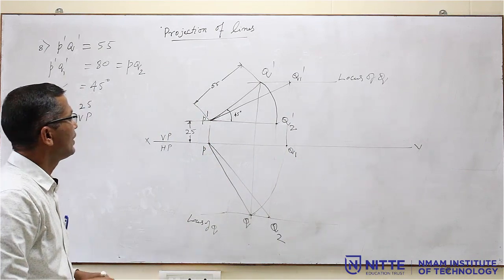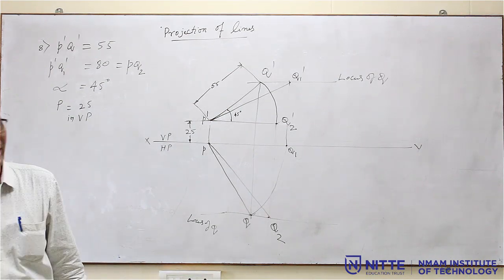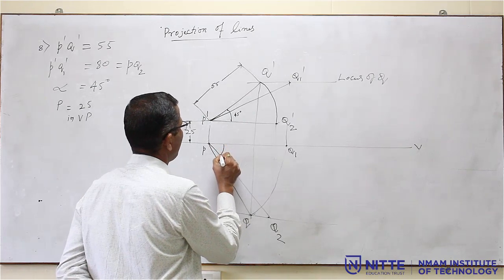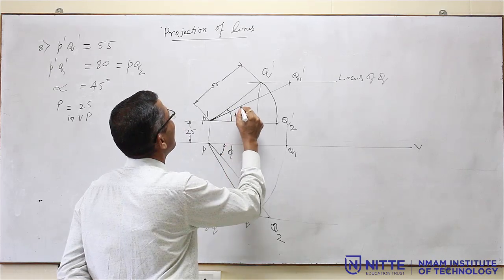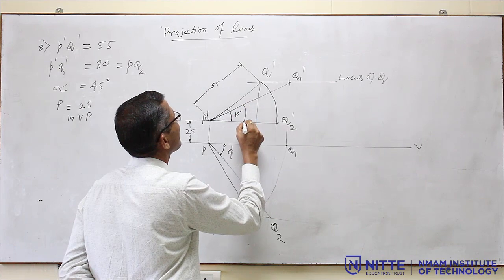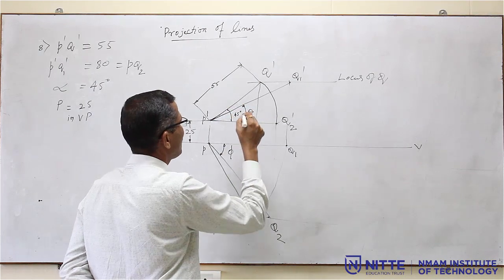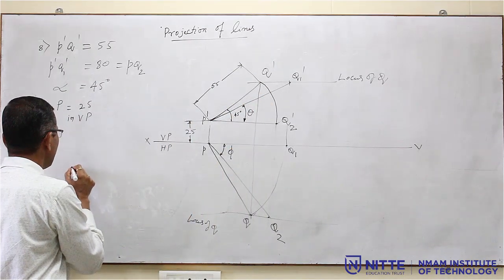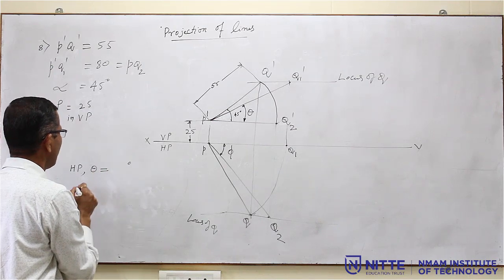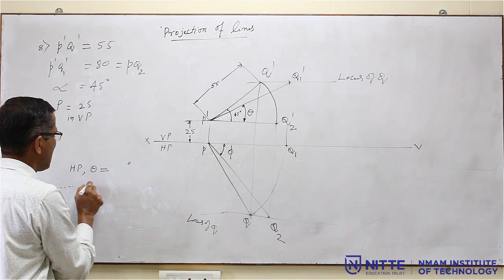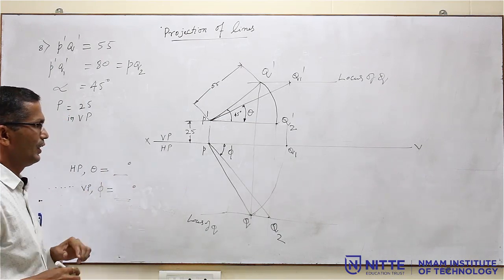This completes the solution. They ask you to find inclinations with HP and VP: this inclination is phi, and this inclination is theta. You have to measure and give the answers — inclination with respect to HP: theta equals so many degrees; inclination with respect to VP: phi equals so many degrees.